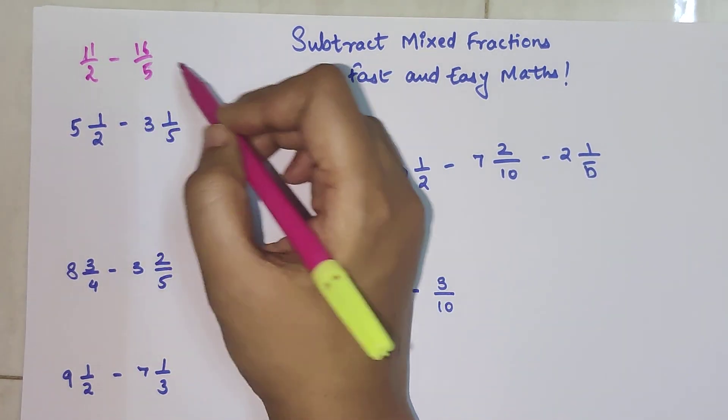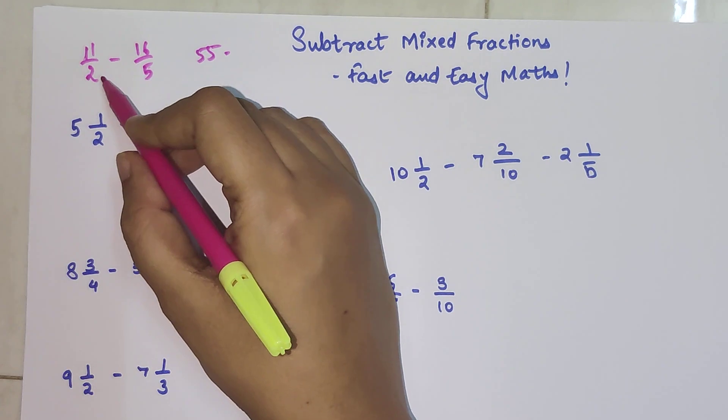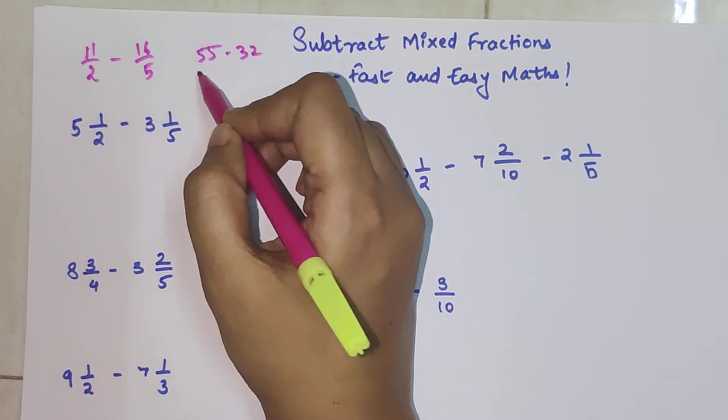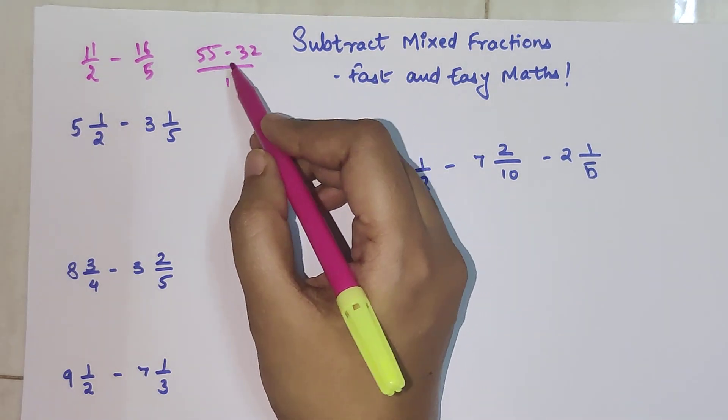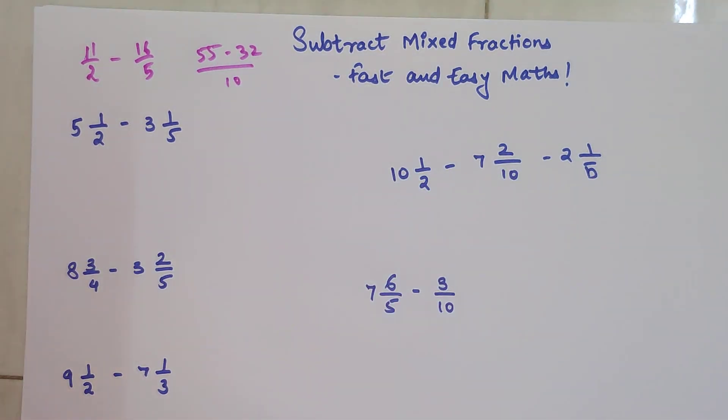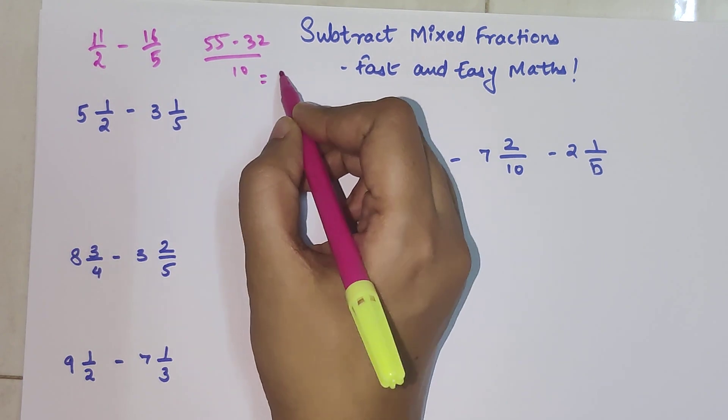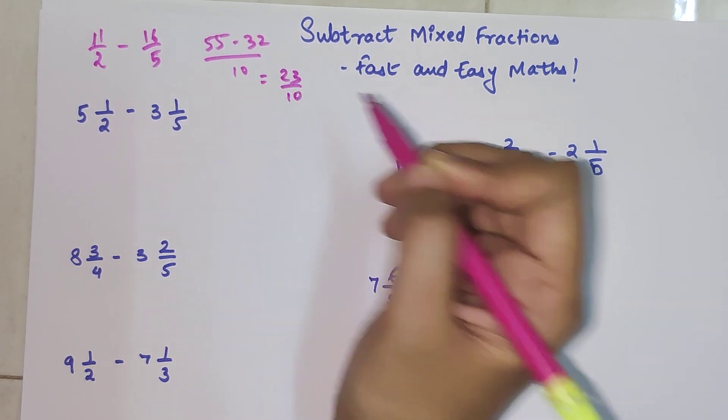So 11 into 5 is 55 minus 2 into 16 is 32 upon 2 into 5 which is 10.